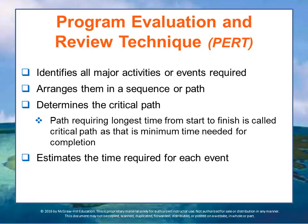A PERT chart identifies all the major activities and events required to complete a project and arranges them in a sequence or path. This determines what's called the critical path, where there may be bottlenecks, where multiple processes come together, and where there are contingencies. Based upon this, one can estimate the time required for each event and pay particular attention to the critical path to make sure that bottlenecks don't develop in the process.